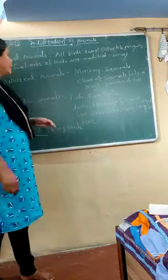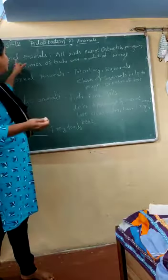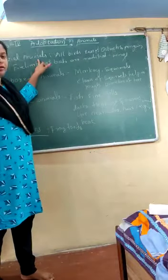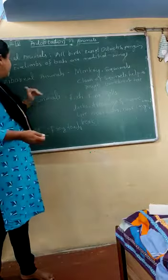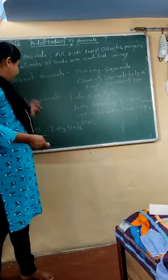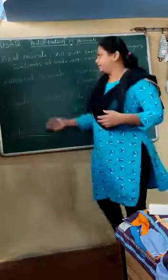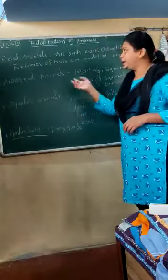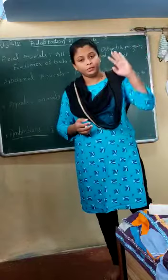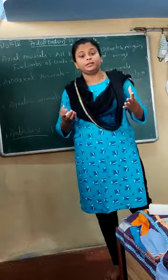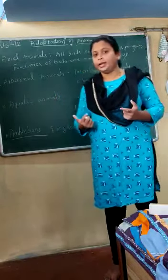In this video we are going to discuss how animals live in the air — those are called aerial animals — and arboreal animals, aquatic animals, and the amphibians. What are the aerial animals? Animals which live most of the time in the air are called aerial animals.